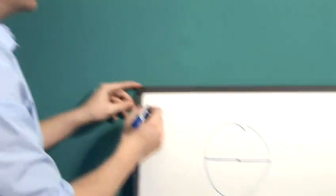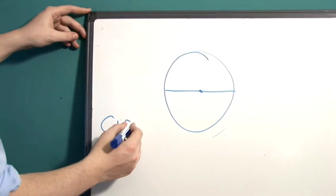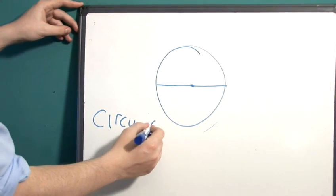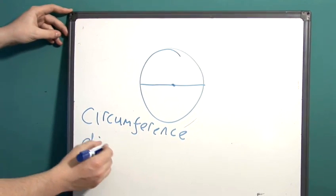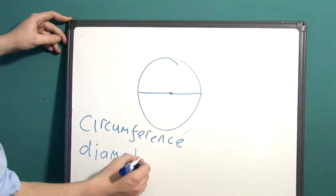If you know those two things, the circumference—the distance around the edge—and the diameter, then you can find out for yourself exactly what pi is.